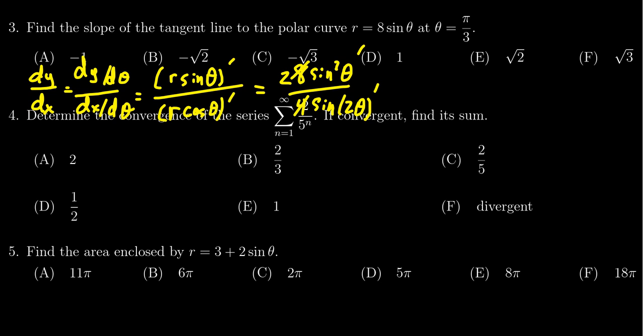So you take the derivative of this thing. On the top, using the chain rule, you're going to get 4 times sine theta cosine theta. And then in the denominator, you take the derivative, you're going to get 2 cosine of 2 theta. And we need to evaluate this thing when theta is equal to pi thirds.